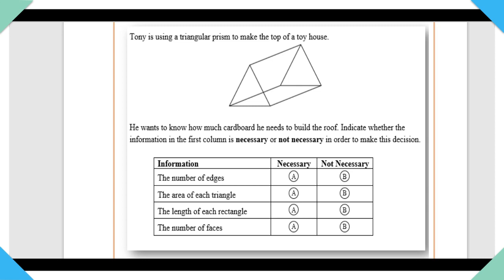Item 14. Tony is using a triangular prism to make the top of a toy house. He wants to know how much cardboard he needs to build the roof. Indicate whether the information in the first column is necessary or not necessary in order to make this decision. Let's look at our information. The number of edges. These are the edges of our prism here. So knowing the number of edges will give us no information as to the size of our roof. So that's not necessary. That information is not necessary.